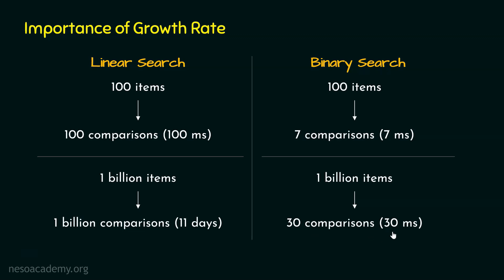With only 30 comparisons, binary search will take just 30 milliseconds. Is it still 14 times faster than linear search? No. This time, binary search is nearly 31 million times faster than linear search. Previously it was 14 times faster with 100 items, but with 1 billion items, binary search suddenly became 31 million times faster.